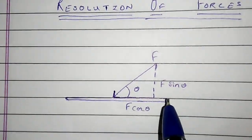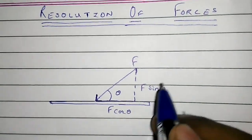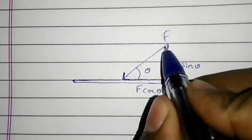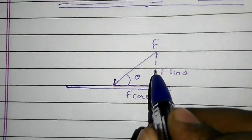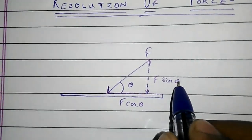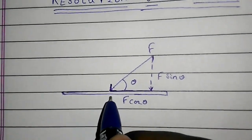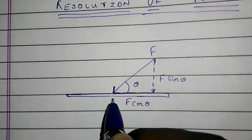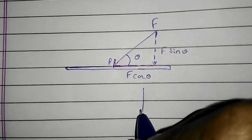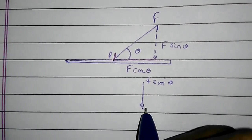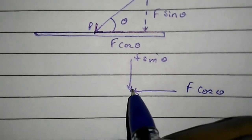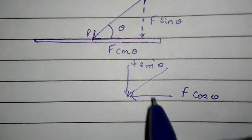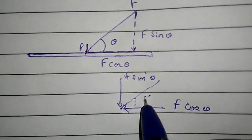You will notice that both the forces we have resolved will be mutually perpendicular to each other. For example, if one force is acting on a body making an angle theta, and the magnitude of the force is F, then the vertical component will be F sin theta and the horizontal component will be F cos theta. So if at point P we put F sin theta and F cos theta, it would be the same as the parent force in both direction and magnitude.